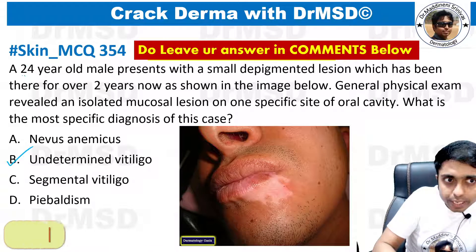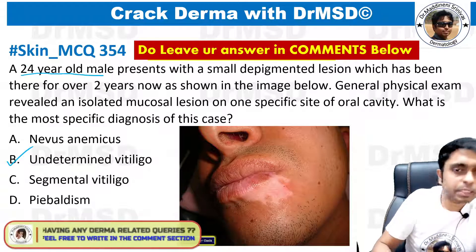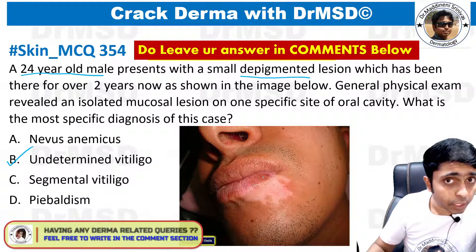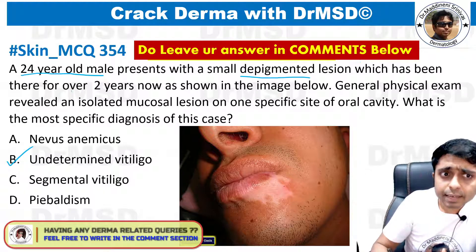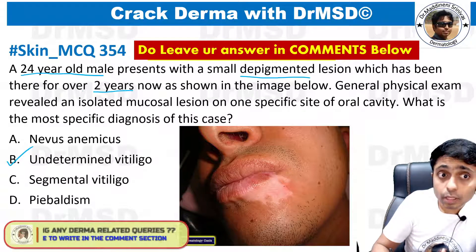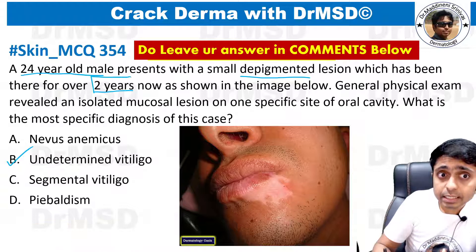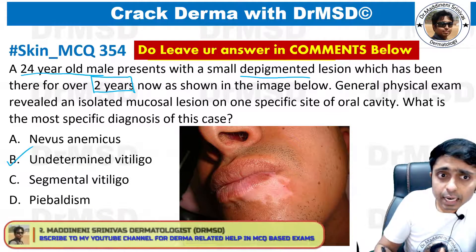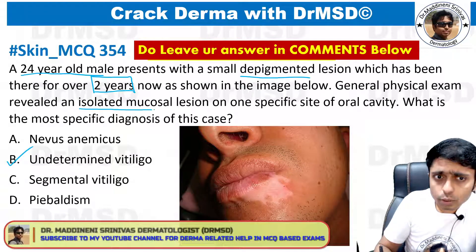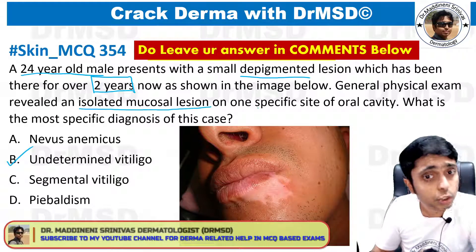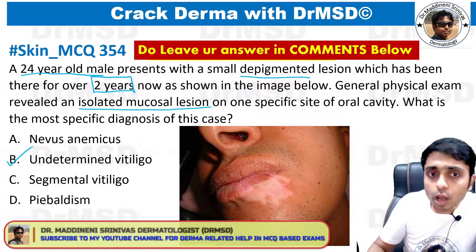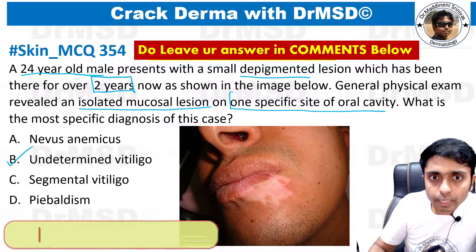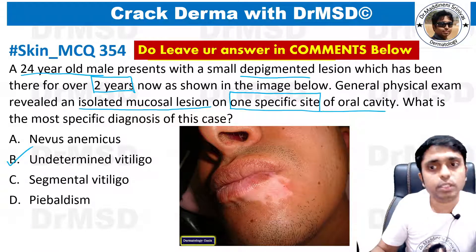The question says a 24-year-old male presents with a small depigmented lesion, shown in the image, which has been there for over two years. General physical examination reveals an isolated mucosal lesion on one specific site of the oral cavity. So these are the clues given in the question.